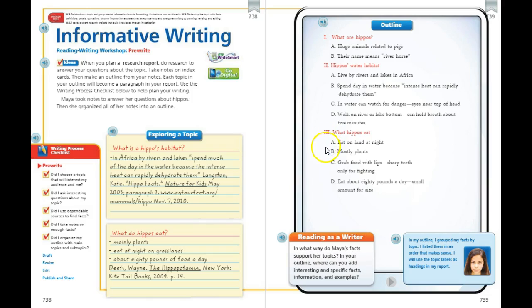So then hippos eat on land, mostly plants. She included the part where they grab and how they eat. They don't have sharp teeth for eating, only for fighting. And they eat about 80 pounds a day, which is a really small amount of food for the size of a hippo.